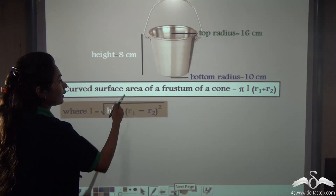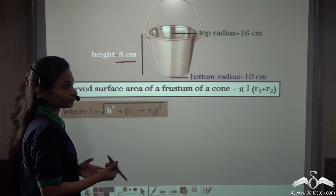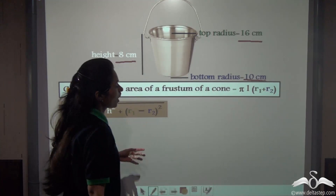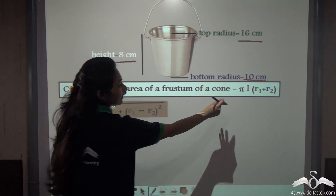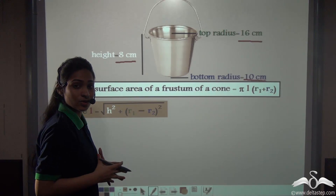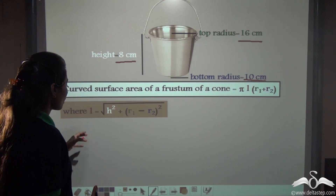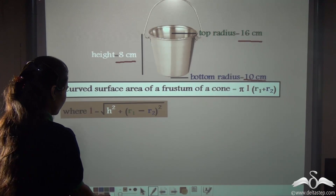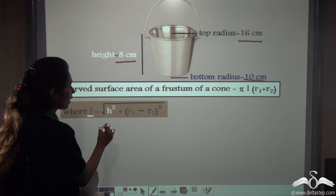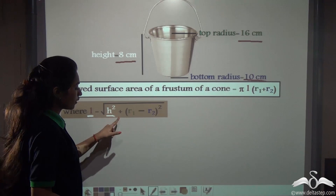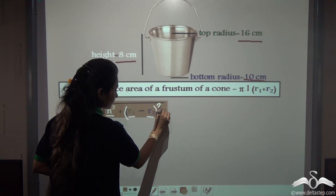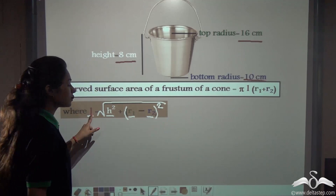We have been given that the height of this bucket is 8 cm, the top radius R1 is 16 cm, and the bottom radius R2 is 10 cm. However, we do not have the slant height in our formula directly, and it is not provided, so we need to calculate it. There is a formula for the slant height: L = √(h² + (R1 − R2)²).